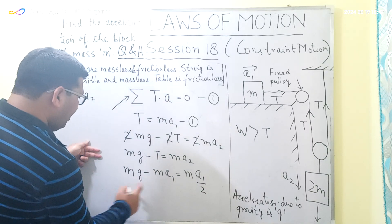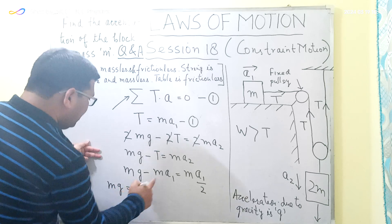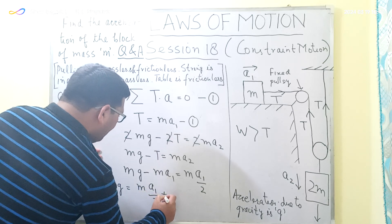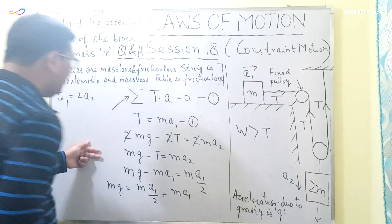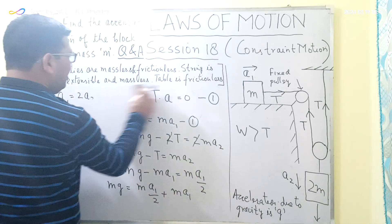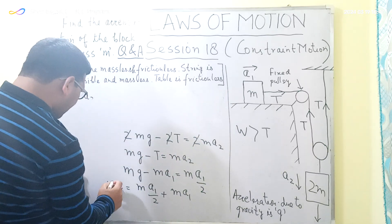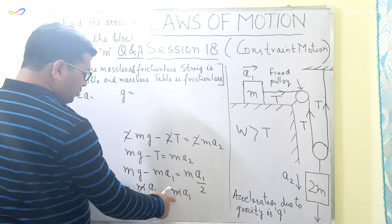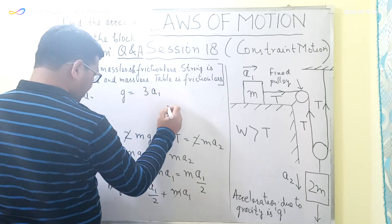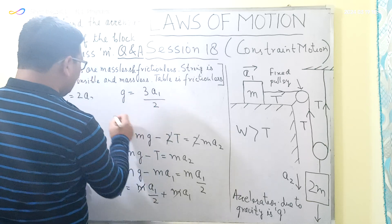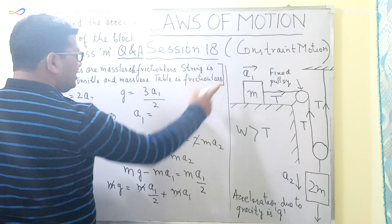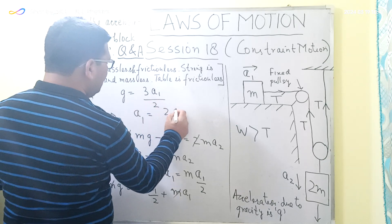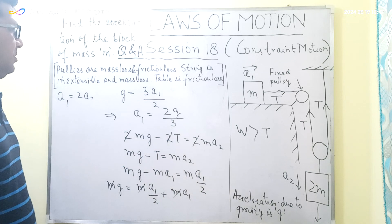Rearranging: G = A1/2 + A1 = 3A1/2. Therefore A1 = 2G/3. The acceleration of the block of mass M is 2G/3.